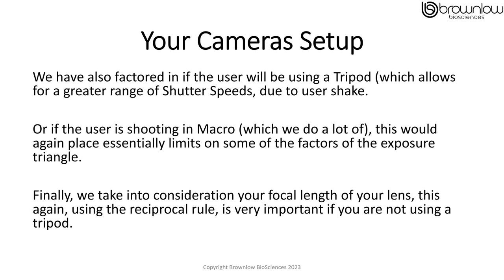Within your camera setup area of the application, which is displayed as a cog wheel, we've also factored in if the user is using a tripod, which would allow for a greater range of shutter speeds due to user handshake, or if the user is shooting in macro, which we do a lot of. This will again essentially place limits on some of the factors for the exposure triangle.